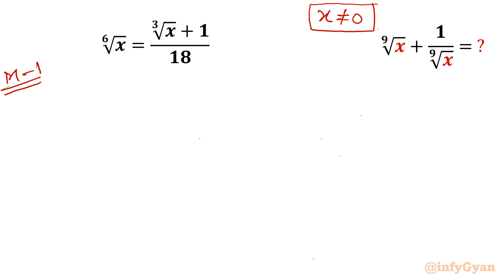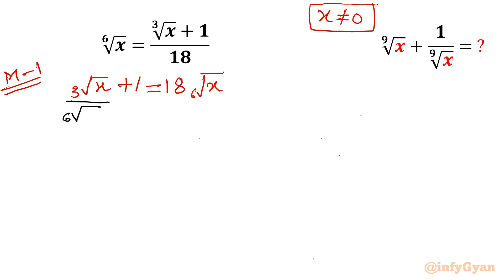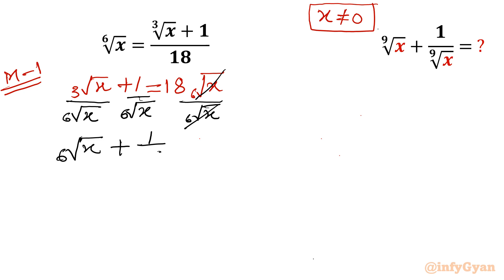I will begin with cross multiplication on the given equation. So I can write it as the cube root of x plus 1 equal to 18 times the 6th root of x. Now as x is non-zero, I can divide both sides by the 6th root of x. On the right-hand side these two terms cancel, giving x to the power 1/3 minus 1/6. So we get the 6th root of x plus 1 over the 6th root of x equal to 18. This is actually our given equation.